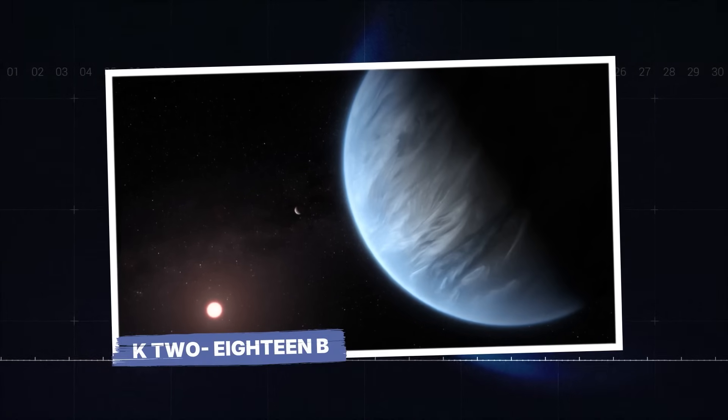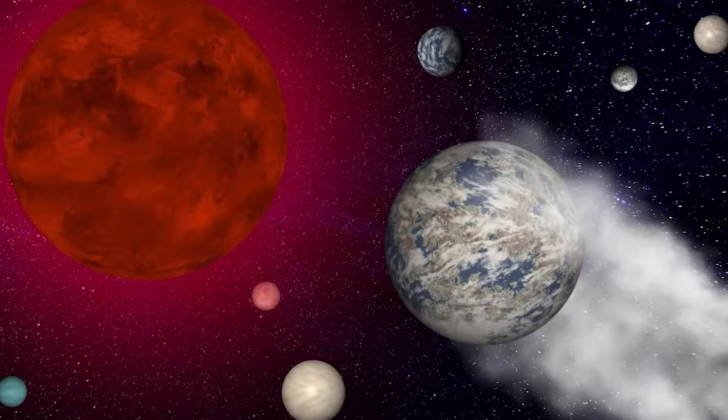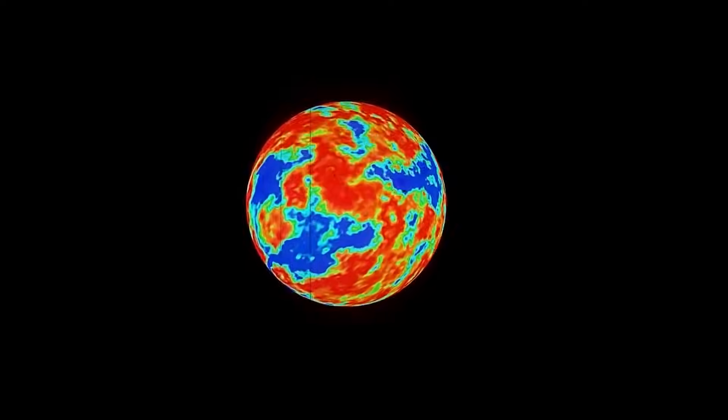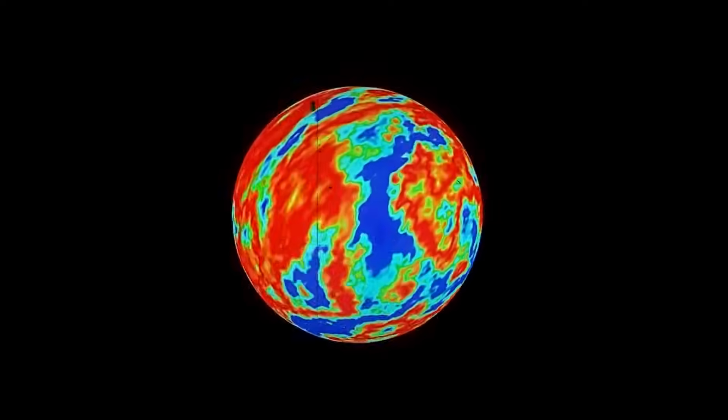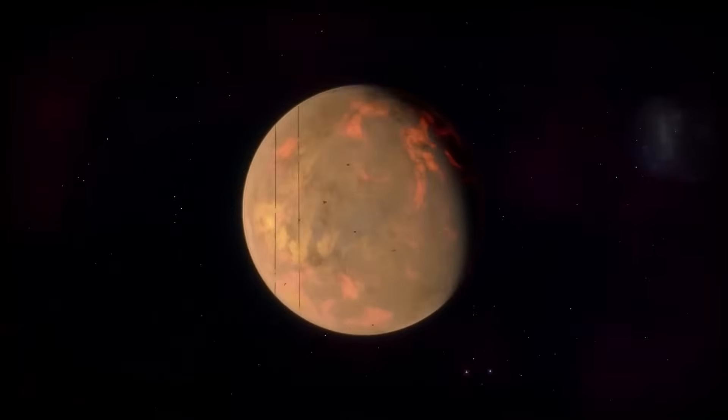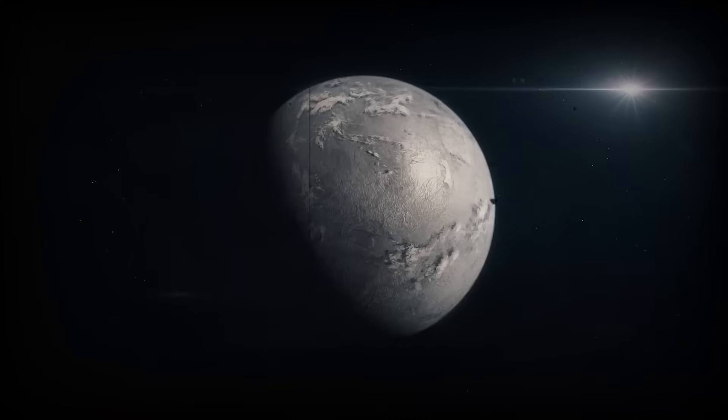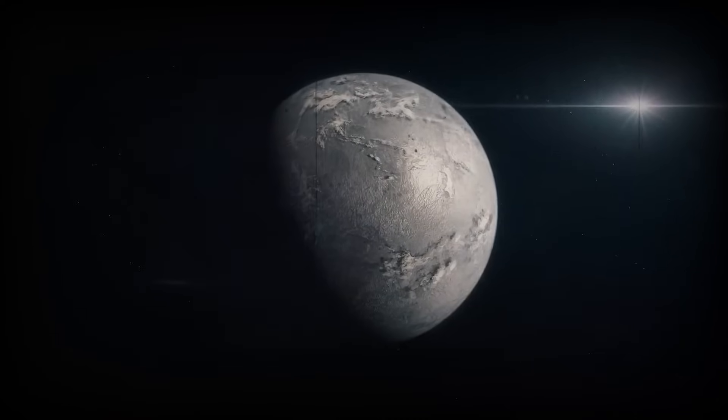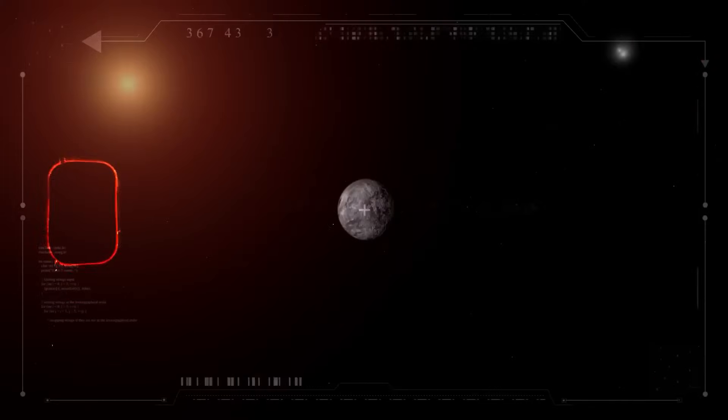K2-18b. Just when TRAPPIST-1 had our attention, another planet threw the scientific world into a frenzy—K2-18b. Located 124 light-years away in the constellation Leo, this exoplanet orbits within the habitable zone of a red dwarf star, and recent discoveries have made it one of the most exciting candidates in the search for alien life.